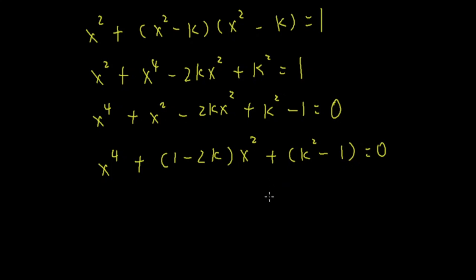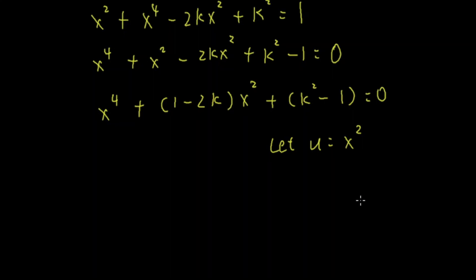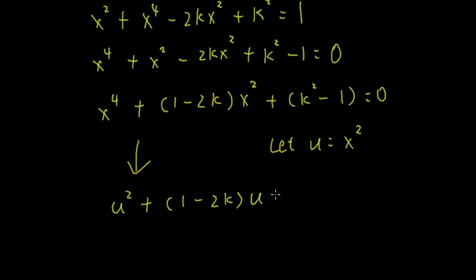Letting u = x², this becomes u² + (1 − 2k)u + (k² − 1) = 0, which is a quadratic equation in u. We can apply the quadratic formula to solve for u.